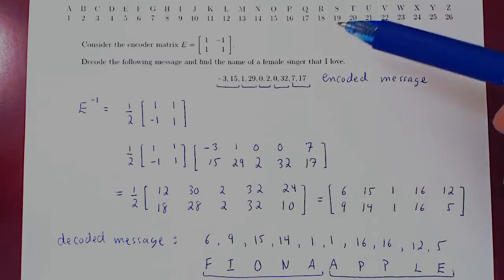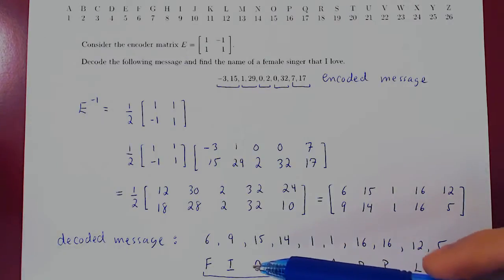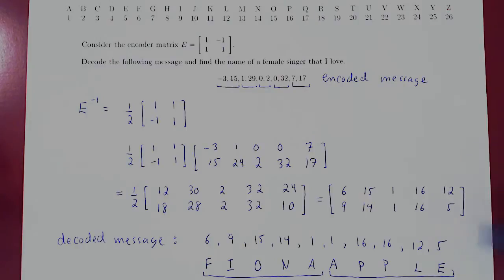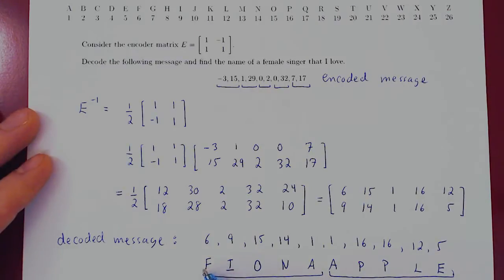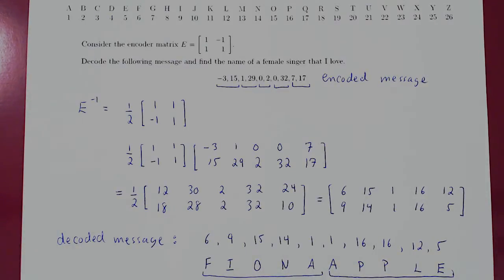Now one last little comment, as you can see that since we're not including an empty space as one of our characters, where we could add an empty space for the number 27, then we have to figure out where the break is between the different words. Now obviously in real life, if you would encode much longer messages, you would need to enter as an extra character an empty space, so as to make the reading of the decoded message simpler. And that's it.